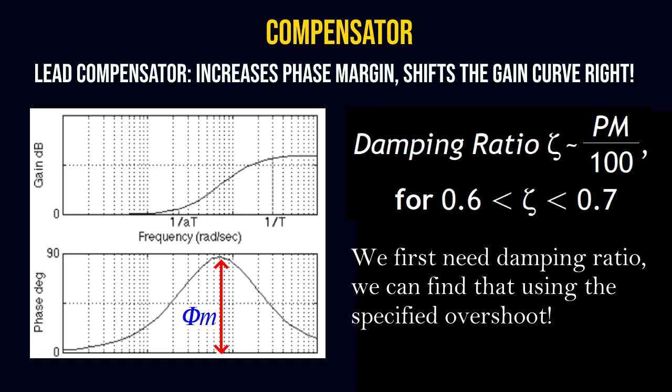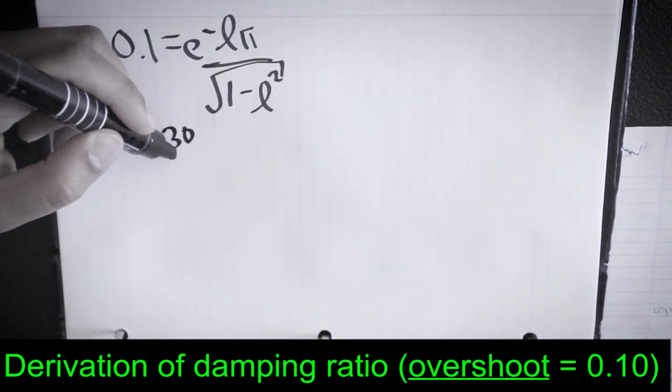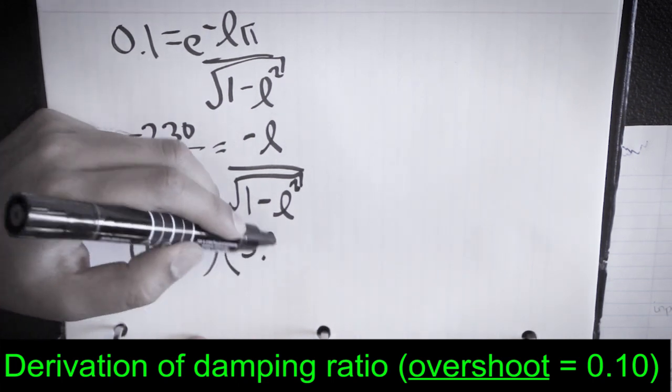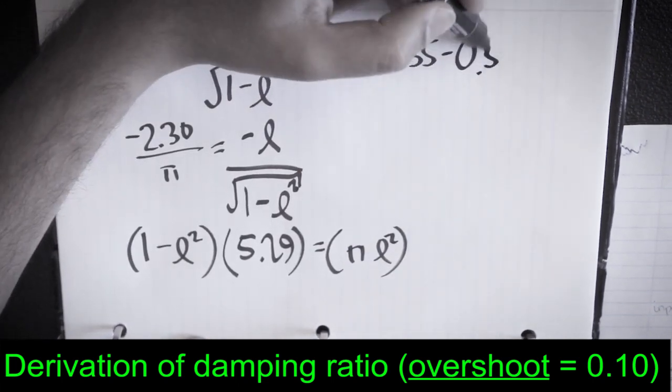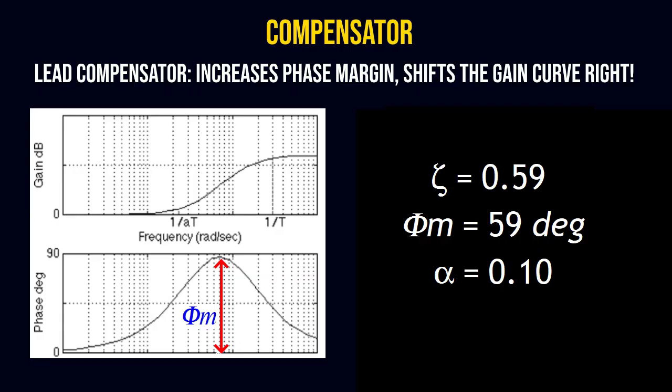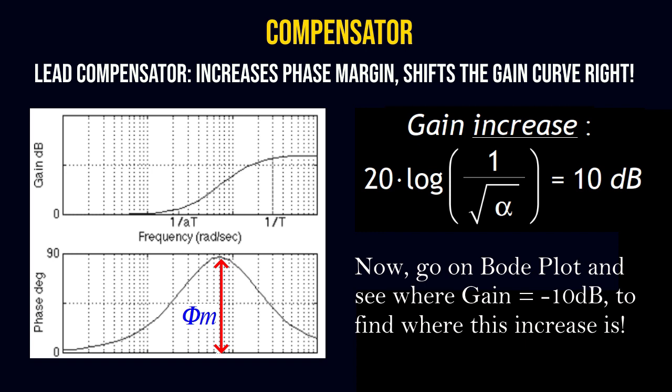First we need the damping ratio, which we can find using the given overshoot specification. After the derivation relating overshoot to damping ratio, we get a damping ratio of 0.59, which gives a phase margin of 59 degrees. Plugging that back into the sine function gives α = 0.1. This will create a gain increase of 10 decibels, meaning the gain will shift upward by 10 dB. We need to find where on the Bode plot we will have this 10 dB gain increase.